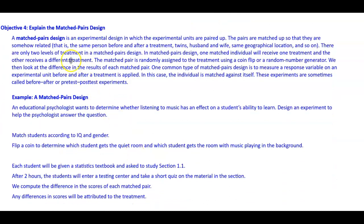Objective four: explain the matched pairs design. A matched pairs design is an experimental design in which the experimental units are paired up. The pairs are matched so that they are somehow related — the same person before and after a treatment, twins, a husband and wife, same geographical location, and so on. There are only two levels of treatment in a matched pairs design. One matched individual receives one treatment and the other receives a different treatment, and the pair is randomly assigned using a coin flip or random number generator.